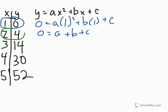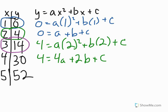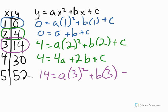Now I move to the second point on the table to create my second equation. I plug 4 in for y and 2 in for x, so I get 4 equals a times 2 squared plus b times 2 plus c, which simplifies to 4 equals 4a plus 2b plus c. Then I move to the third point, using 14 for y and 3 for x, so I get a times 3 squared plus b times 3 plus c.